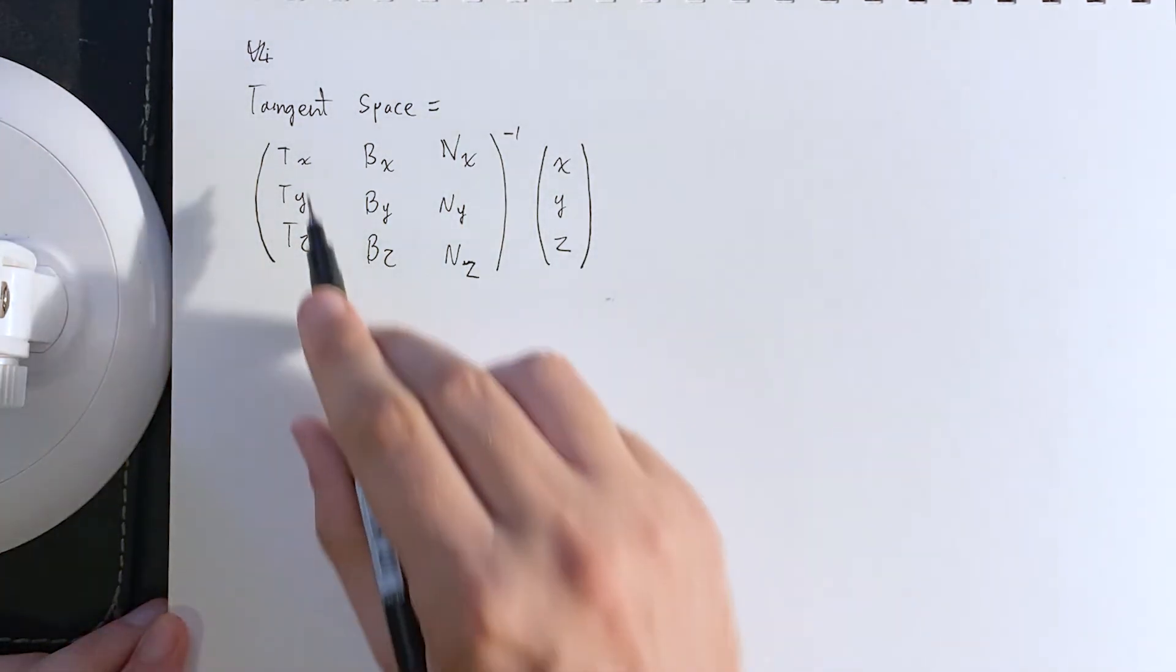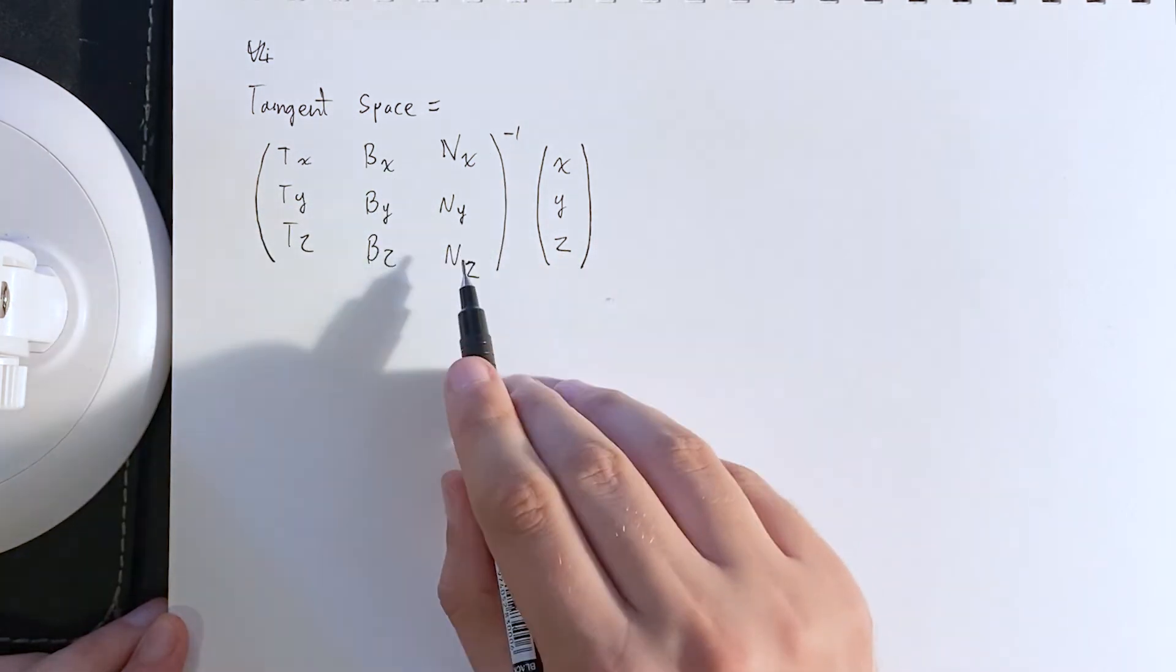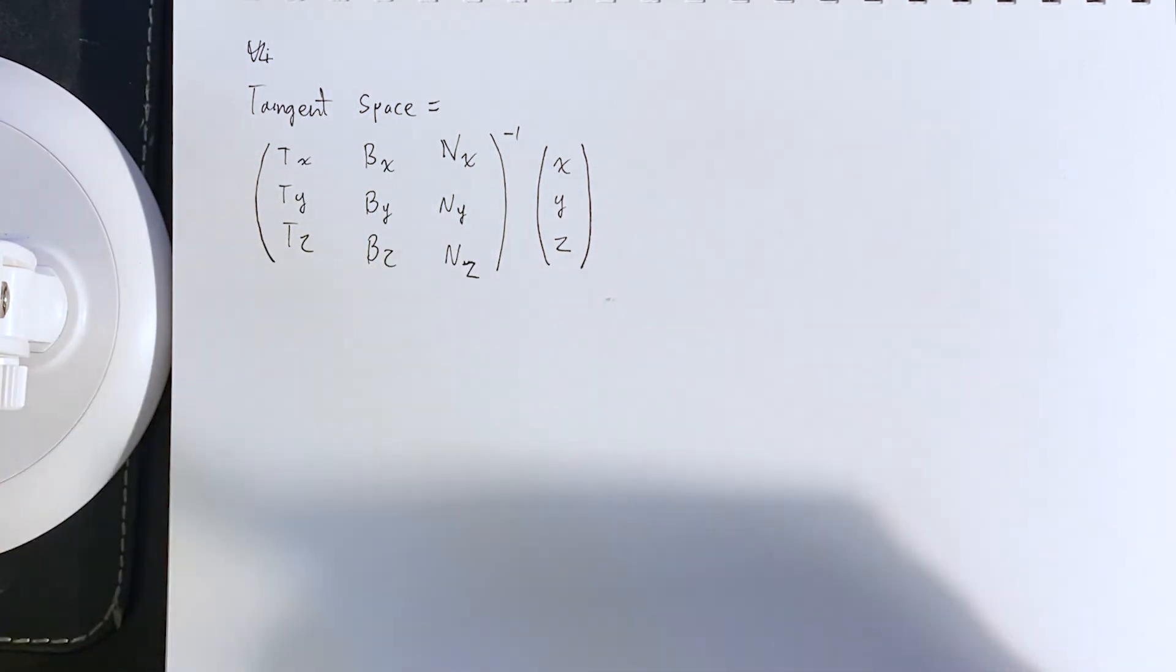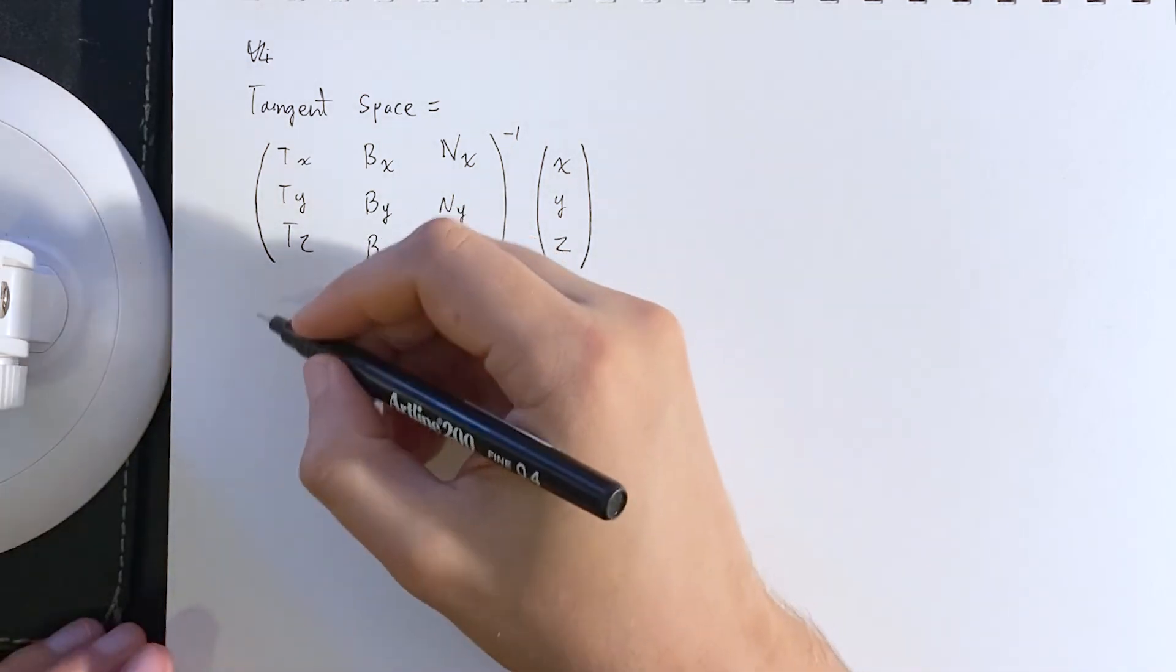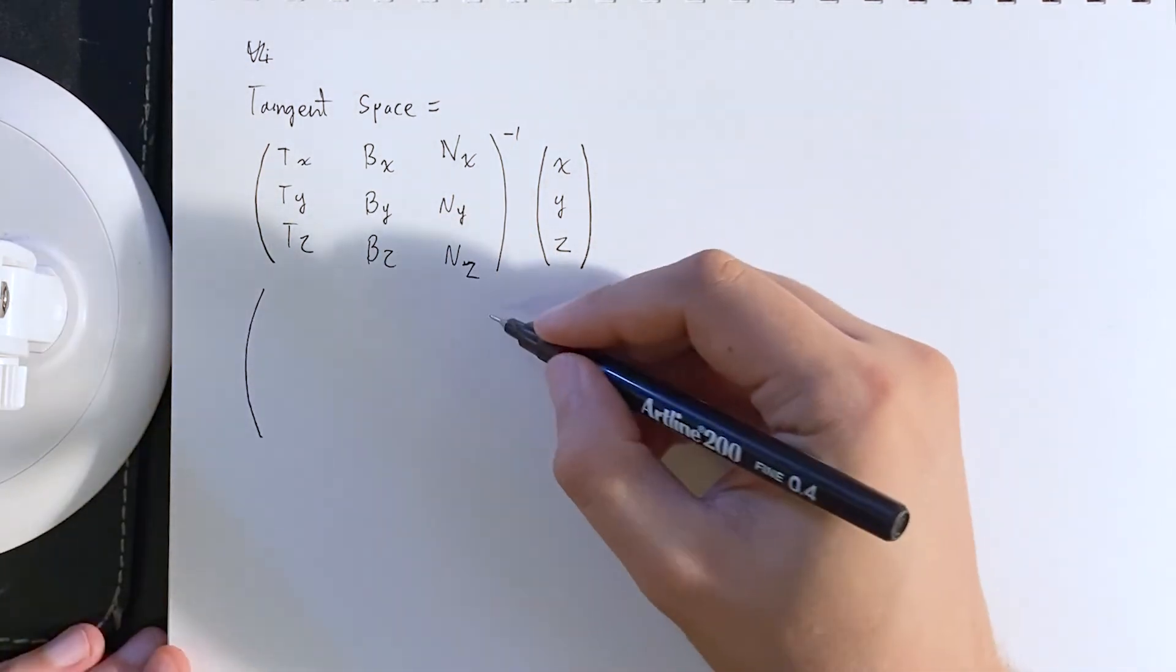So, because these columns, okay, so these are orthonormal, right? The tangent, bitangent, and normal directions should all be orthogonal to each other, 90 degrees, perpendicular, and we'll normalize them as well. Because they're orthonormal, the inverse of that matrix is just its transpose.